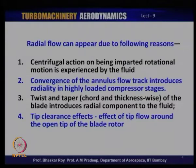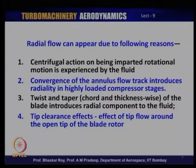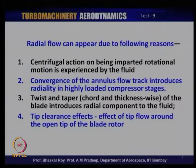The first reason why radial flow would almost invariably be present in an actual flow compressor is the centrifugal action of the rotational motion, which is passed on to the fluid. This centrifugal action would invariably try to impart a certain amount of radial flow to the fluid as it is passing through the blade, especially the rotating blade. Then the convergence of the annulus flow track — in modern compressors the flow track is quite often of converging type, especially in highly loaded modern aircraft engine compressors — introduces radiality anyway.